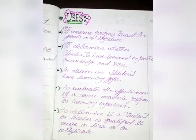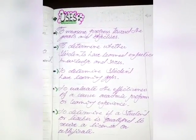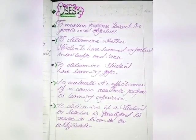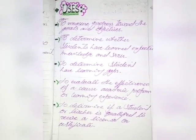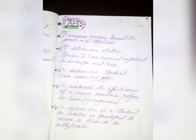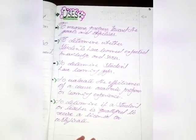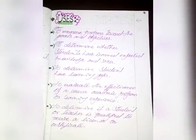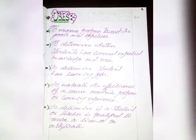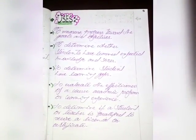Uses of criterion reference tests include: to measure progress towards goals and objectives, to determine whether students have learned expected knowledge and skills, to determine if a student has learning gaps, to evaluate the effectiveness of a course or academic program, and to determine if a student or teacher is qualified to receive a license or certificate. CRT is used for assessing student knowledge gaps, academic program effectiveness, and qualification purposes.